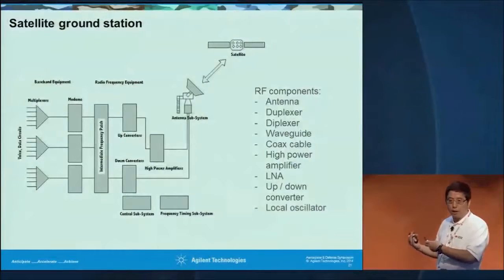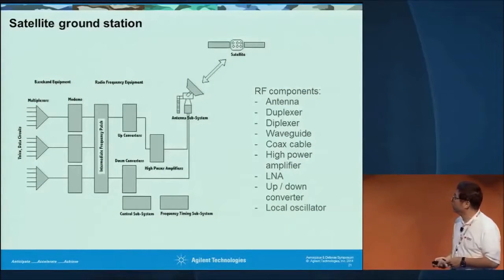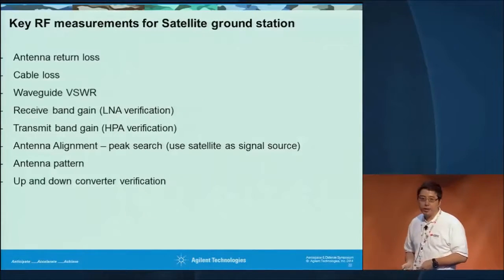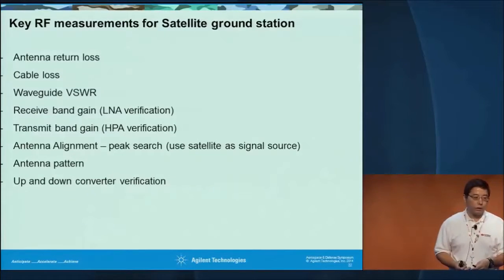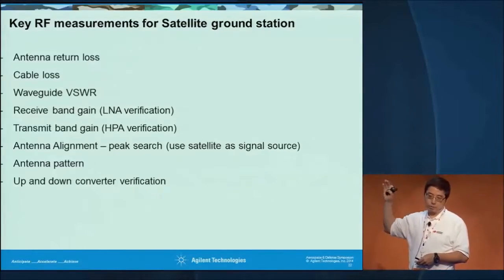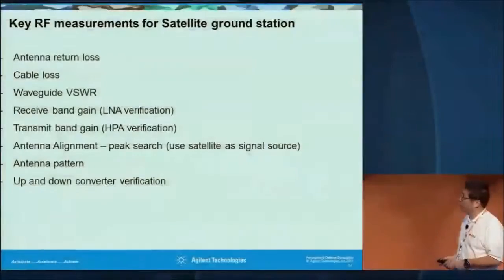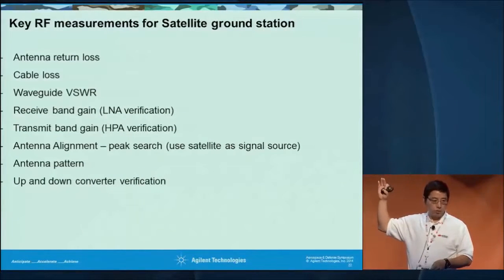The second example is the satellite ground station. Similar to radar but not pulsed, you can use a satellite as your signal source and use a spectrum analyzer to search the peak. Another critical measurement for satellite is the antenna pattern — you use a geostationary satellite as a signal source, slowly move your antenna, and use the spectrum analyzer to plot the antenna pattern. Last but not least is up-converter and down-converter measurement, which you can perform using the frequency offset measurement capability inside the Agilent FieldFox.